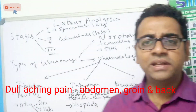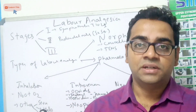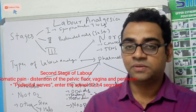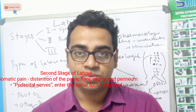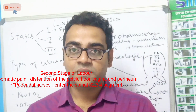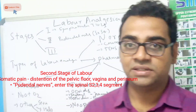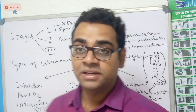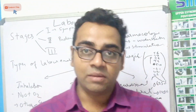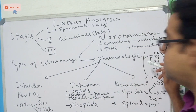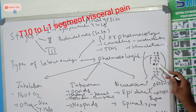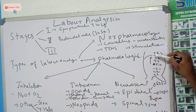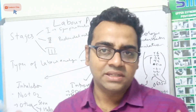In stage two, when the baby's head fixes and comes out of the birth canal, there is stretching of the birth canal. This produces somatic pain, which is transferred by the pudendal nerve, that is S2 to S4. Stage two and stage three are similar — the pudendal nerve carries the pain pathway of labor pain in both stage two and stage three.